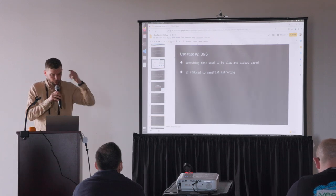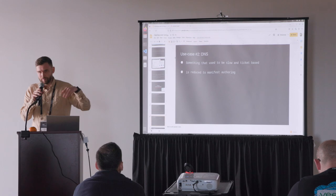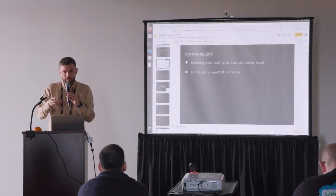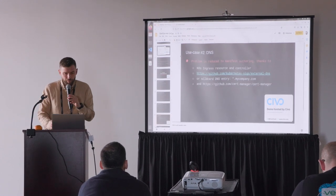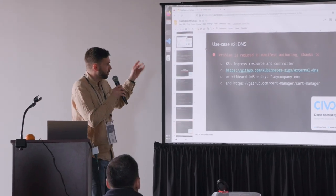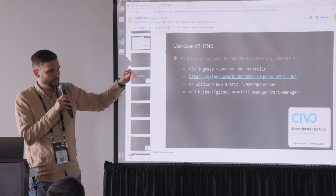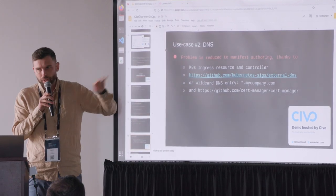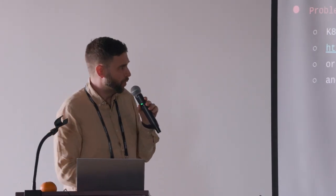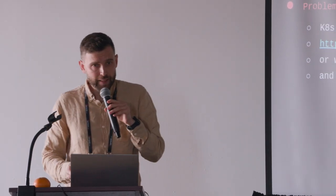Use case two: DNS. In the old world, DNS was this heavy thing — you needed to request through Jira tickets, other teams, it took days and they often messed up so you had to start over. It's also reduced to just manifest authoring. There is the Kubernetes ingress resource, and with some more tooling it's just editing a YAML file. There is an open source tool called external DNS — whenever a new ingress shows up in your cluster with a new DNS name, it makes the change in Cloudflare or another DNS provider. It works super swiftly.